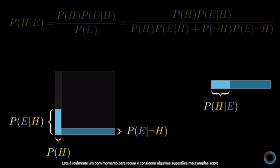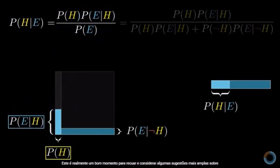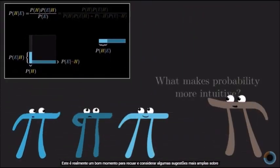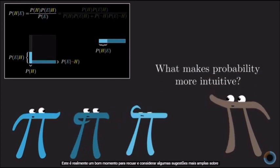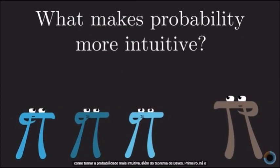Bayes' theorem spells out what that proportion is, and you can read it geometrically: P(H) times P(E|H) — the probability of both the hypothesis and the evidence occurring together — is the width times the height of the left rectangle, the area of that region. This is a good time to step back and consider broader takeaways about how to make probability more intuitive, beyond just Bayes' theorem.